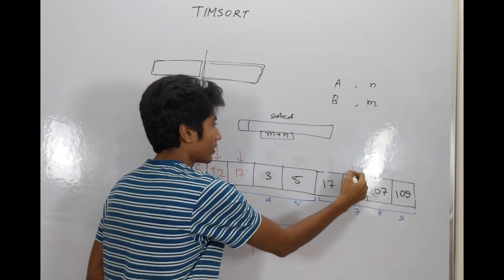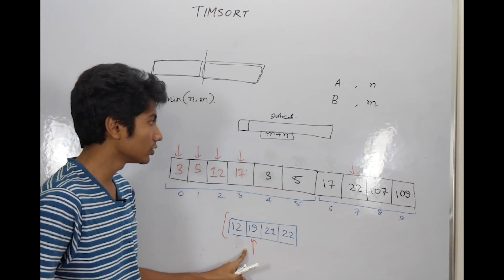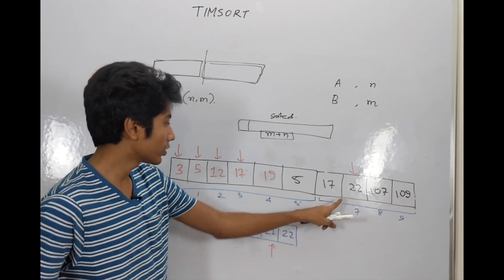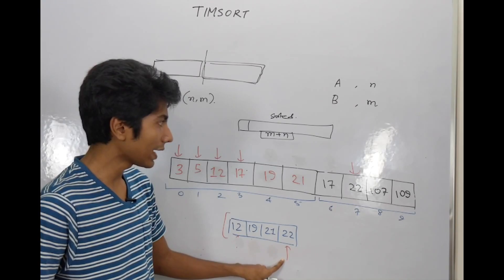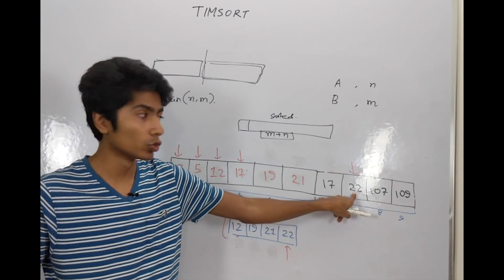So 12 is populated over here and we have this pointer staying where it is, but 12 getting kicked out of the array and coming to 19. At 19 and 17, we see 17 is smaller. So the pointer is incremented. 22 and 19, 19 wins. 21 and 22, 21 wins. Now here's the interesting thing.